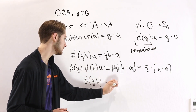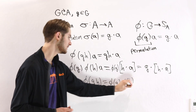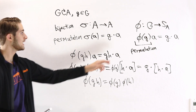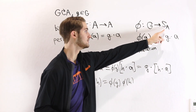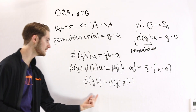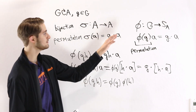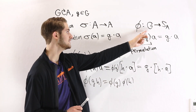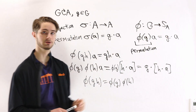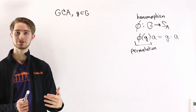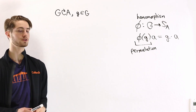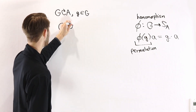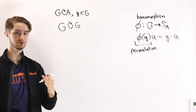Therefore φ(gh) = φ(g)·φ(h), which means φ is a group homomorphism. We're taking a map from G to the symmetric group with this homomorphism property. So this map gives us, for every single group action, a homomorphism from G into the symmetric group on A. To get to Cayley's theorem, we're going to look at a specific group action: for any group G, we consider G acting on itself by left multiplication.